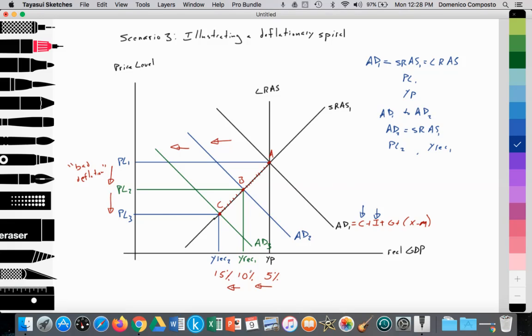The rising unemployment creates greater anxiety within the economy. Businesses become anxious. Households become anxious. The level of savings begins to rise. The level of spending begins to decrease. So that further decreased consumption and investment spending causes AD2 to shift into AD3. Again, firms begin to decrease their quantity of aggregate supply from points B to C, or from Y-recession 1 to Y-recession 2.